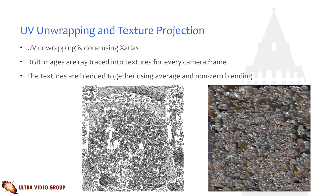In the UV unwrapping stage, the texture coordinates corresponding to the triangles of the mesh are generated. An open source library for mesh parameterization, Xatlas, is used for this. The UV layout is shown on the left. The texture projection phase uses a compute shader to ray-trace the per-frame RGB images into textures. Frames with motion blur are rejected using the frame's Laplacian variance as a threshold; only frames with high enough sharpness value are projected. After every frame is projected, the per-frame textures are blended into one texture using either average or non-zero blending. The final step is to dilate the textures to reduce the effect of blank texture areas causing artifacts. The final texture is shown on the right.